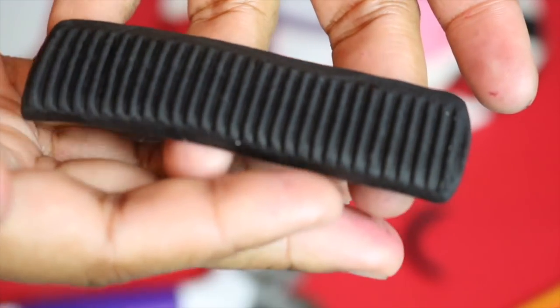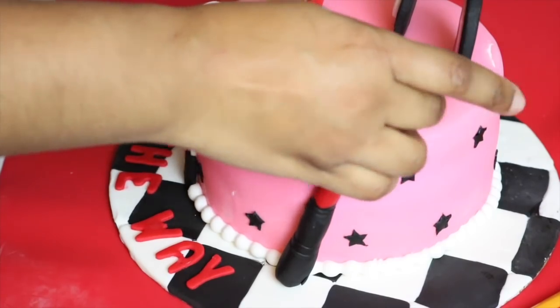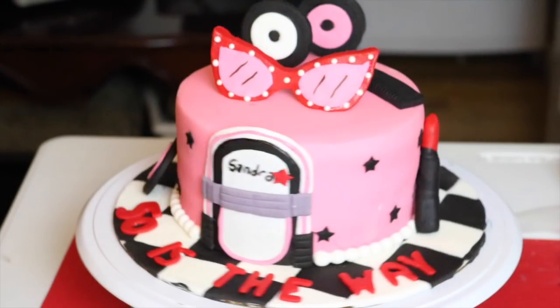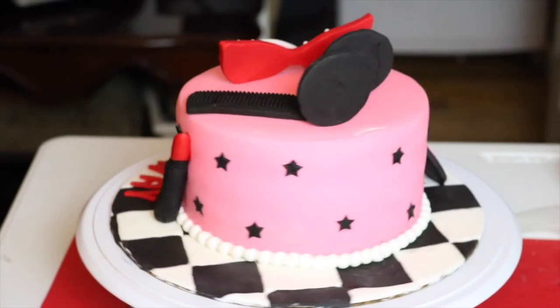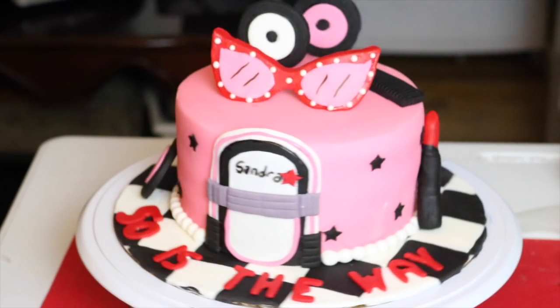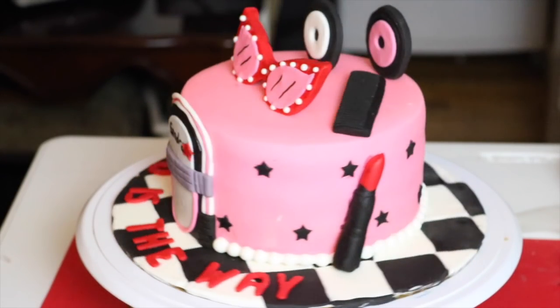So this is what it looks like. I am using some gum glue to attach everything to my cake and I am also going to use some toothpicks to attach the records that are at the top and the glasses at the top of the cake.